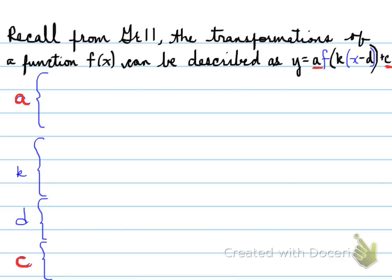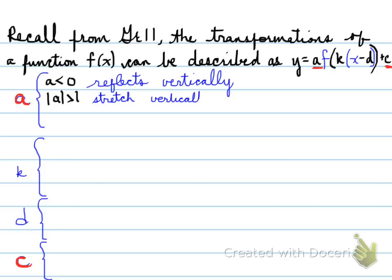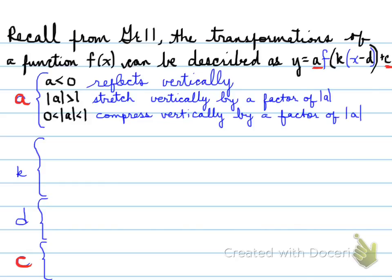Let's look at a. If a is less than 0, so a is negative, we're looking at a reflection vertically. If the absolute of a, meaning the number not the sign, is greater than 1, there is a stretch vertically by a factor of |a|.